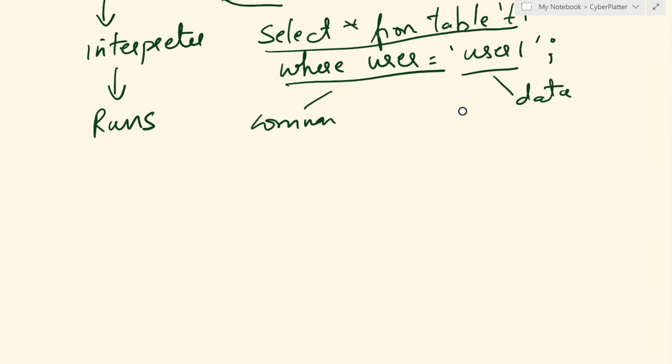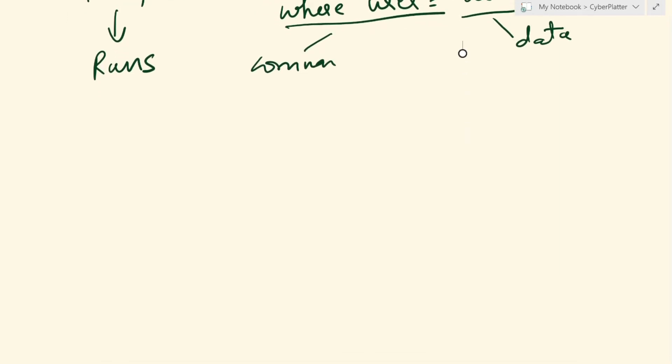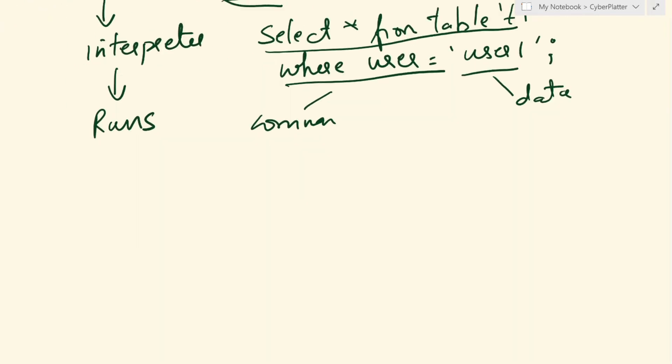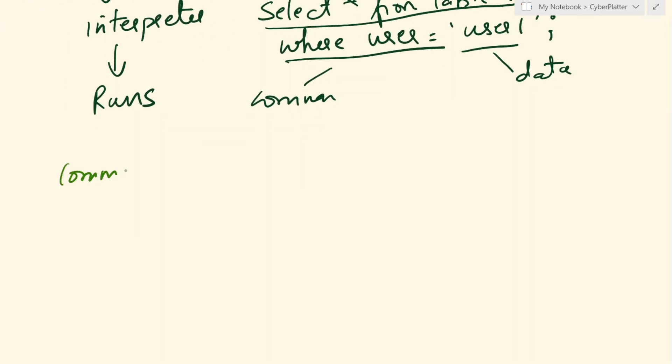So let's see what is the expectation in a normal behavior. So instead of this code, there is command. This is the normal behavior. There is command and there is data. This is the command and this is the data and this is sent to the interpreter and then it is executed.